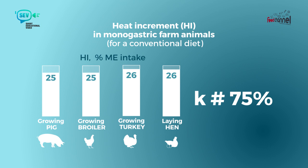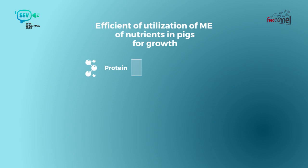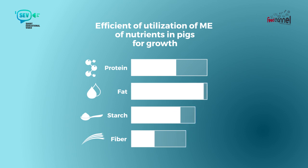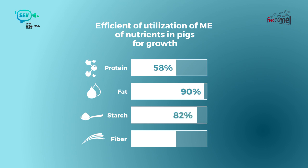It changes because behind the ME there are different nutrients which are used very differently for net energy. Taking values obtained in pigs — though the same data applies to poultry — the energy coming from protein is used with an efficiency of about 60%, while the energy coming from starch or from fat is used with much higher efficiency: 80 or 90%. This means the net energy over ME ratio will not be constant for diets, and more importantly, for individual ingredients.